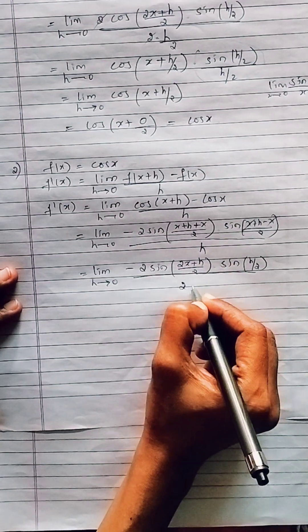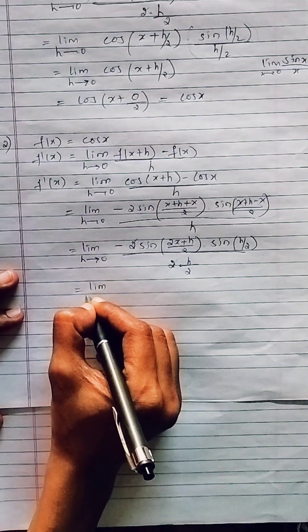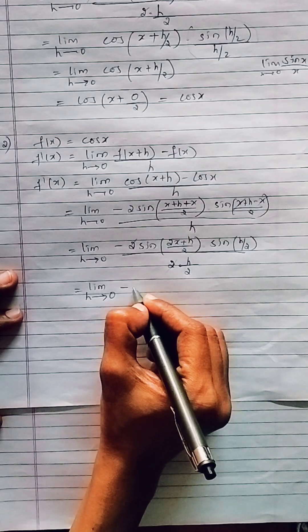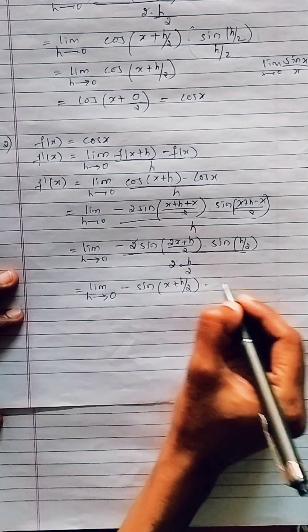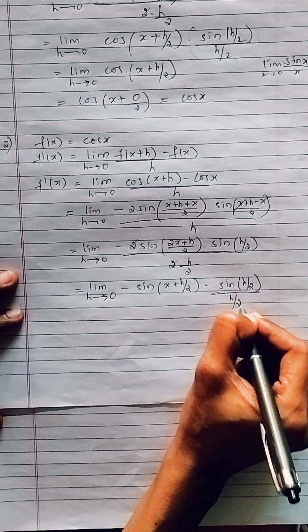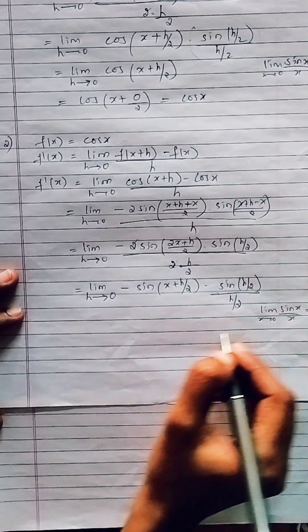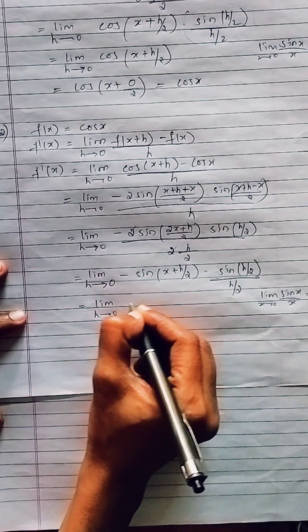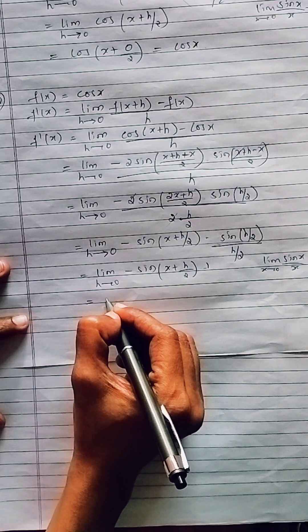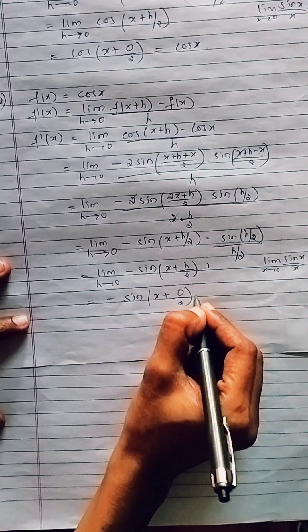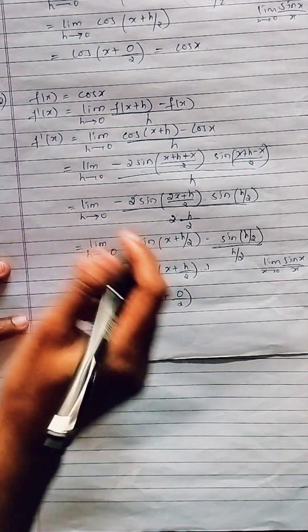Again I multiply and divide the denominator by 2. The 2s cancel, giving limit h tends to 0 of minus sin(x + h/2) into sin(h/2) divided by h/2. The second term is in the form limit sin(x)/x = 1, so it becomes 1. Applying the limit h tends to 0 to the first term gives minus sin(x + 0) = minus sin x. So f'(x) = -sin x for f(x) = cos x.